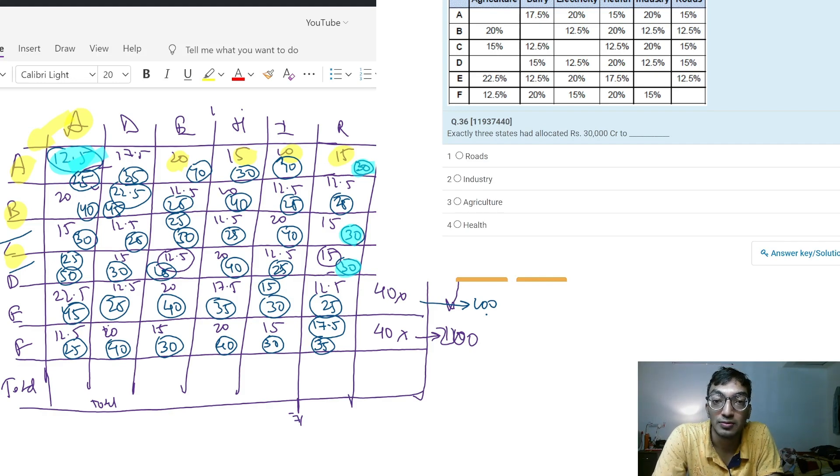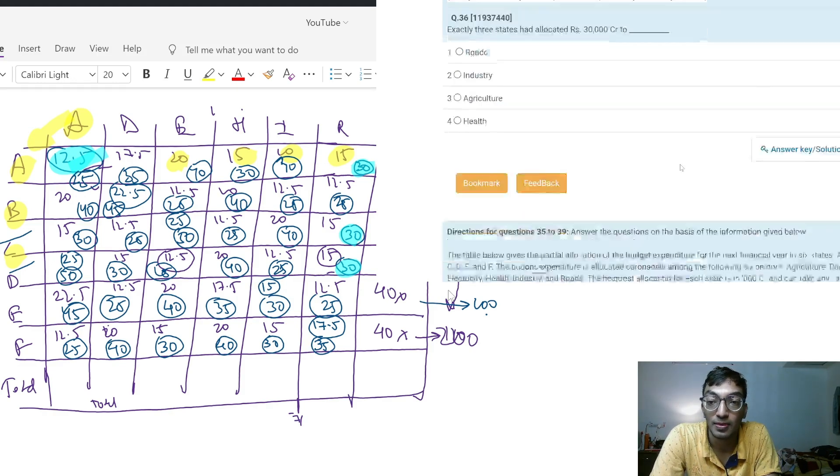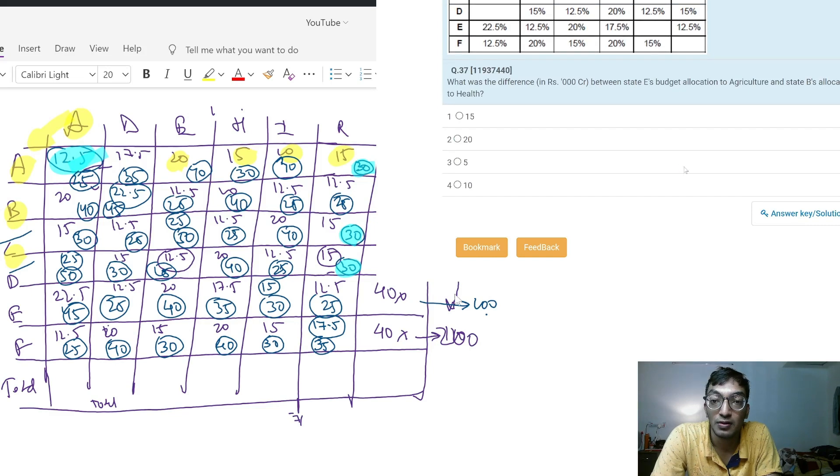Next question: What is the difference in thousand crores between each state's budget allocation to agriculture and E to health? E's agriculture is 45, B's health is 40, so E's allocation difference is 5, that's the answer.